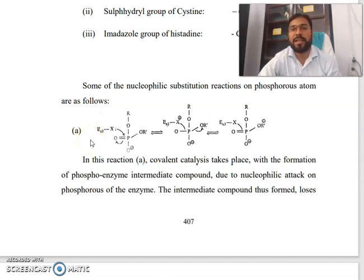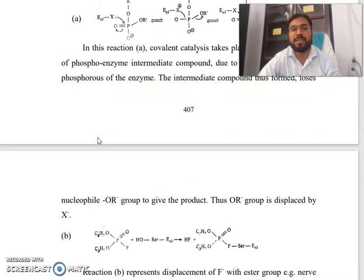Due to nucleophilic attack on phosphorus of the enzyme, the intermediate compound thus formed loses nucleophile OR- group to give the product. Thus OR- group is displaced by X-.